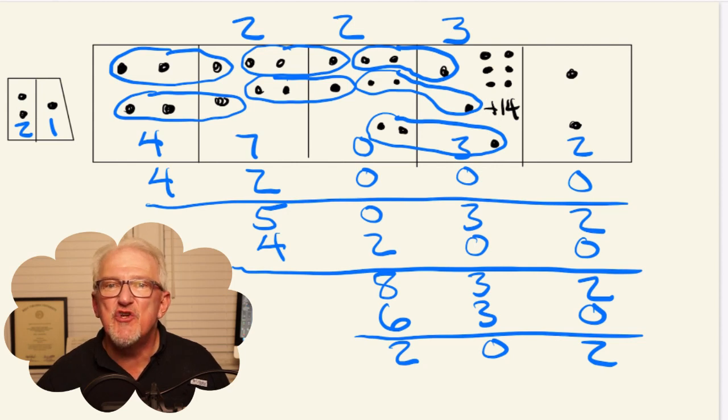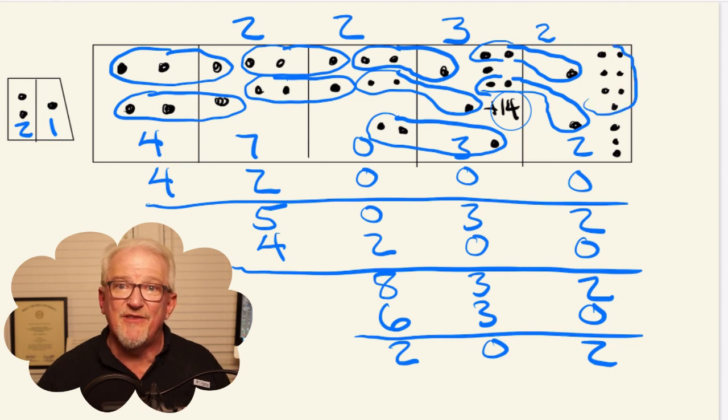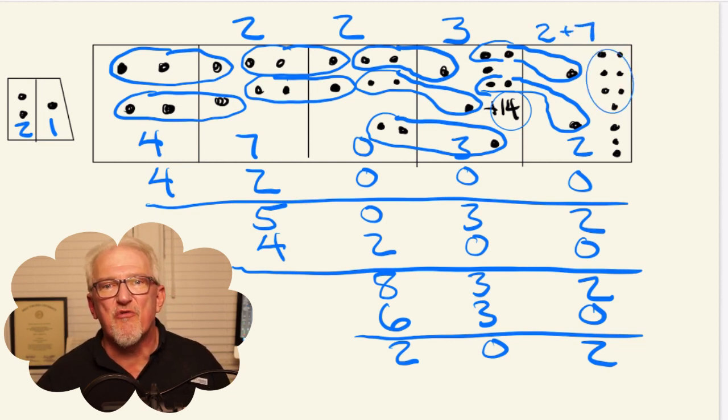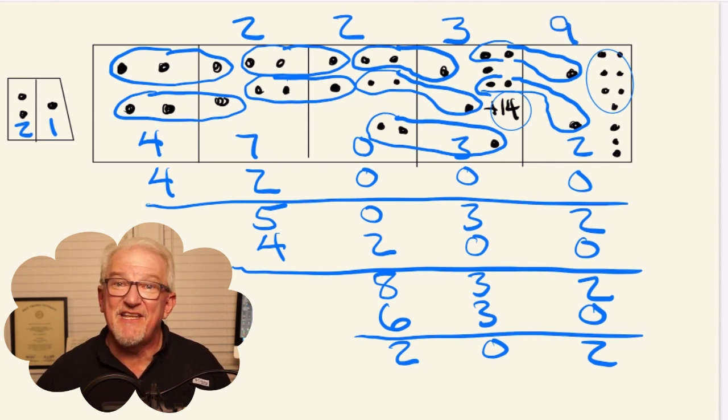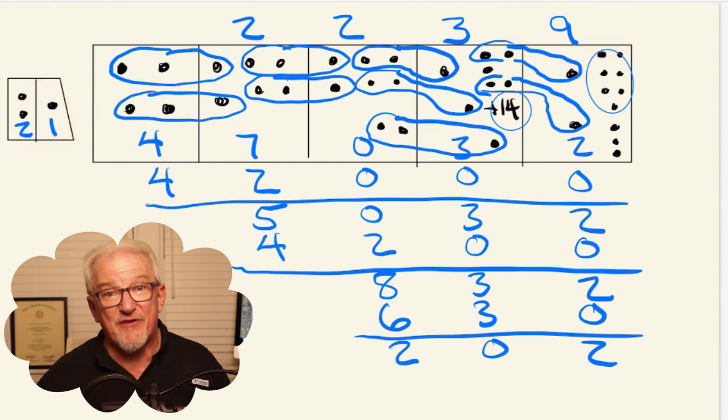This allows us to find two more pictures of two dots followed by one dot before exhausting the dots in the ones box. We can now perform another anti-explosion to provide more dots in the ones box to work with. We can now find seven additional pictures of two dots followed by one dot for a total of 9 groups of 21 dots each.